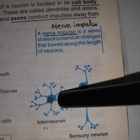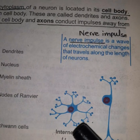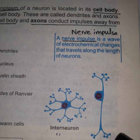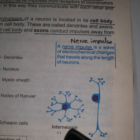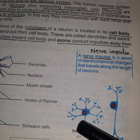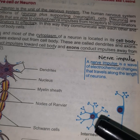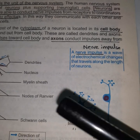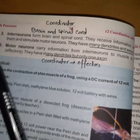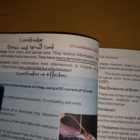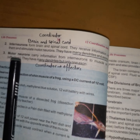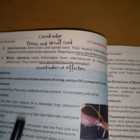The second type is the interneuron. When we talk about our brain or the spinal cord, they are formed of interneurons. These interneurons receive the message from the sensory neuron, then they interpret that message, and the response is transferred to the motor neuron. They have many dendrites and an axon.